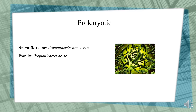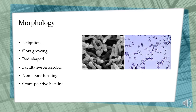The scientific name is Propionibacterium acnes and it belongs to the family Propionibacterium. Propionibacterium acnes is also found in the oral cavity, large intestine, conjunctiva, and external auditory canal.